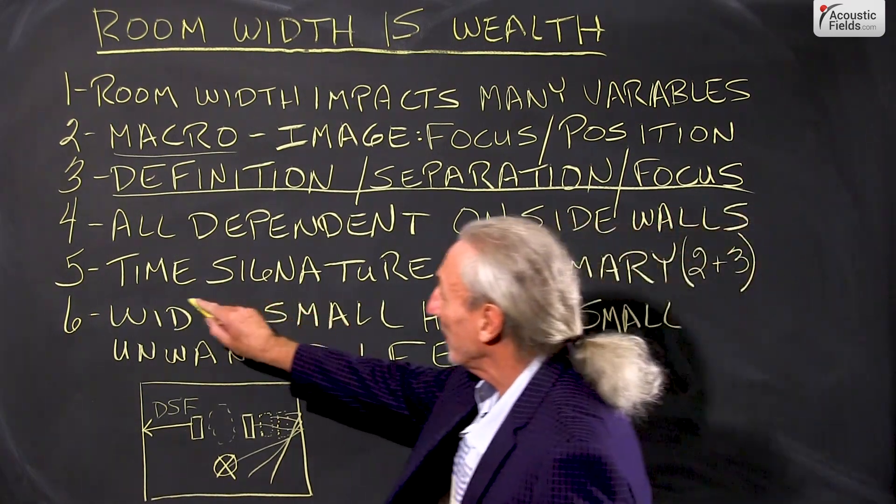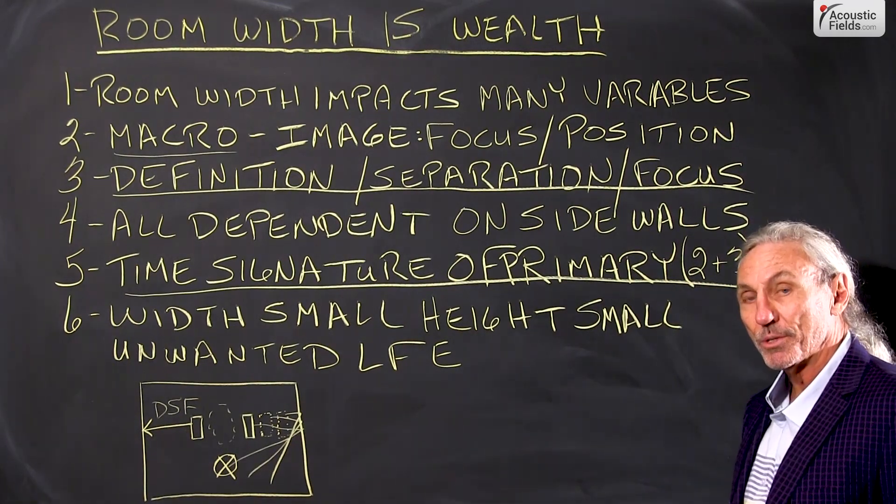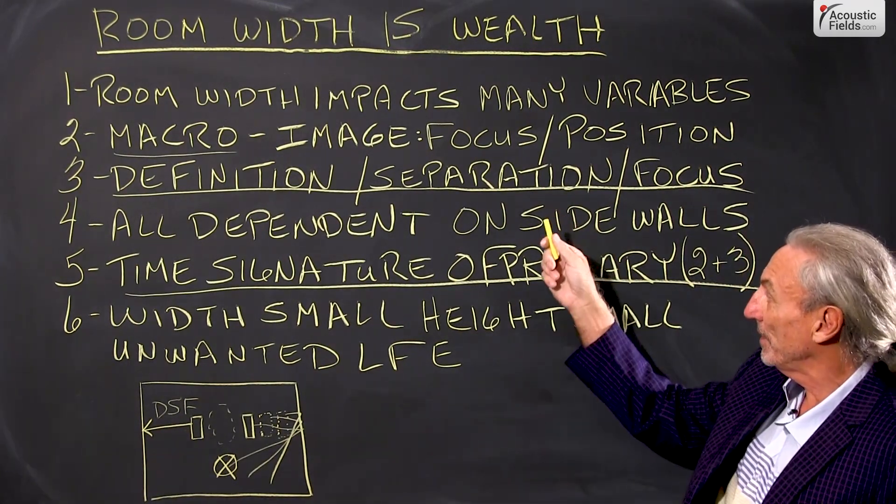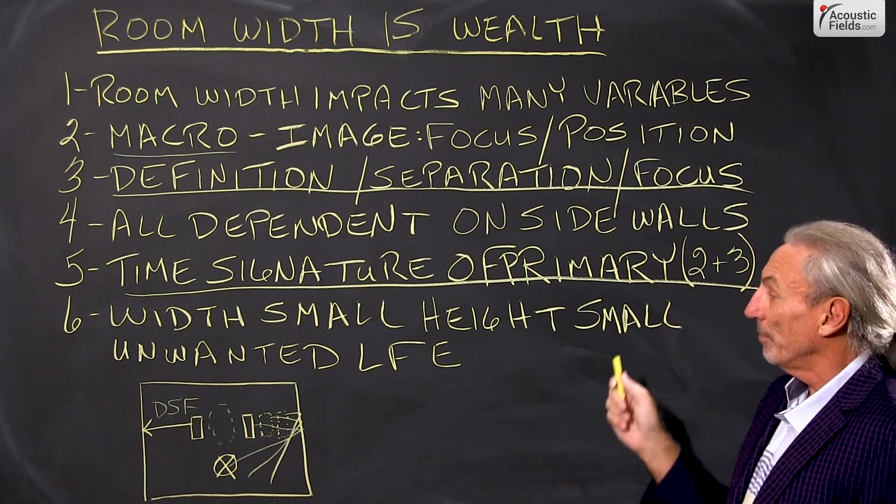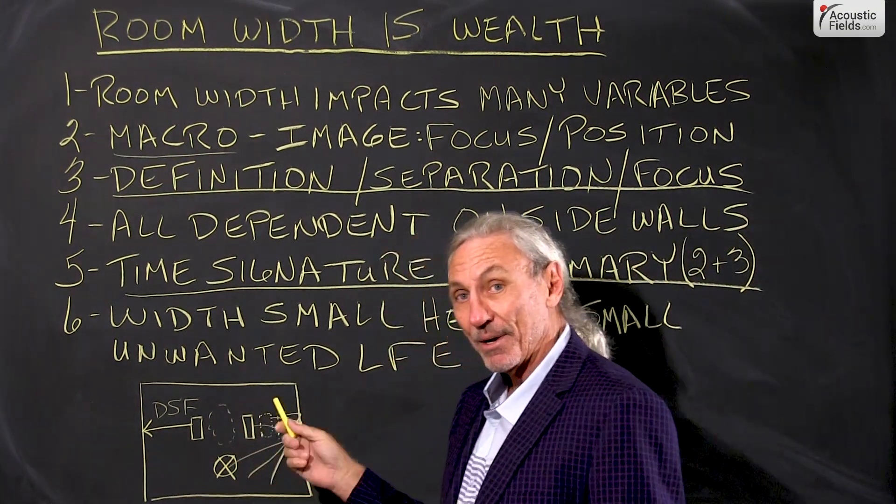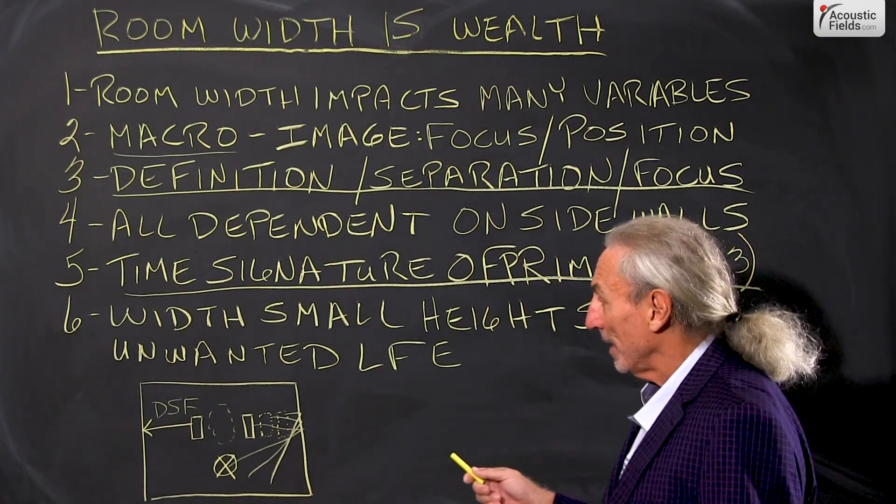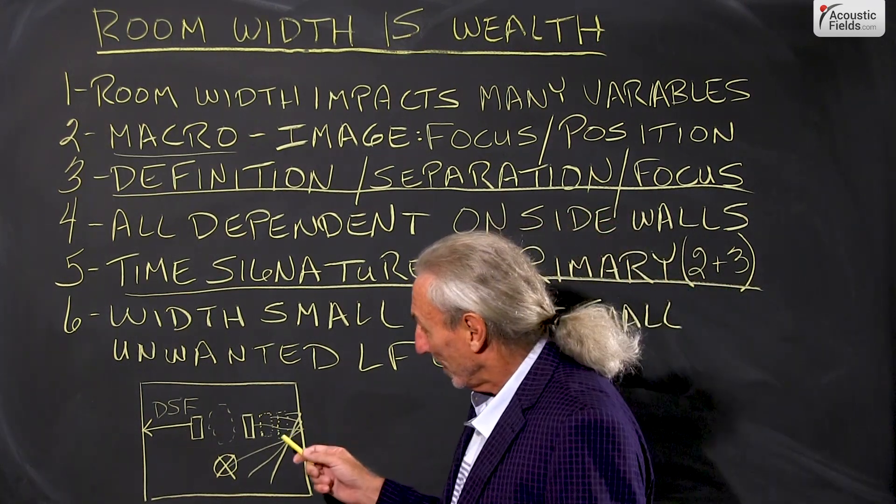Time signature, absorption. We use absorption most of the time because it gives us the definition, separation and focus that we want in our center channel image, and then we add air and more separation with diffusion on other surfaces.